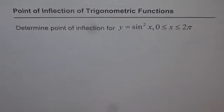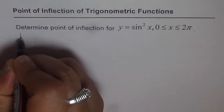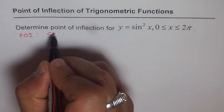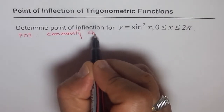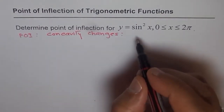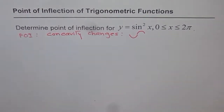Now, what is a point of inflection? A point of inflection is a point where concavity changes. Concavity changes means: if it is concave up, it becomes concave down — that is what it is.